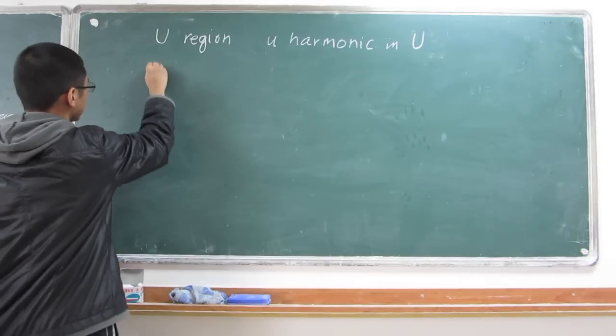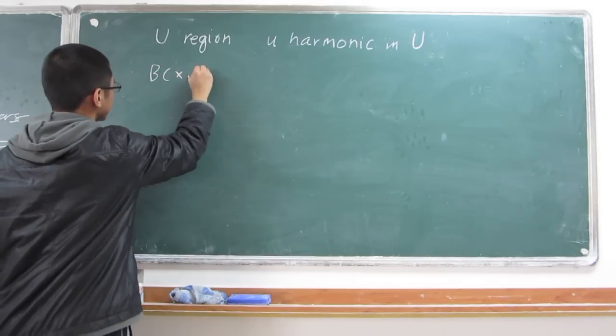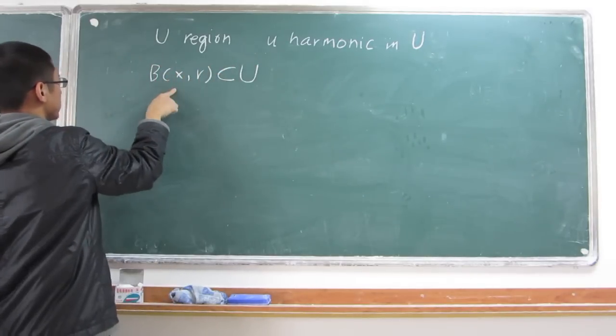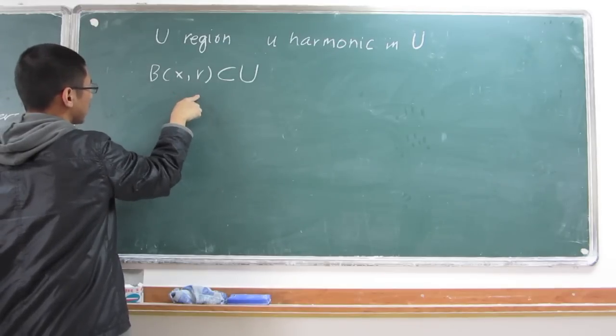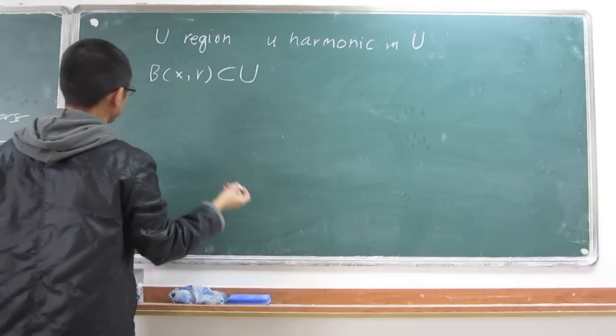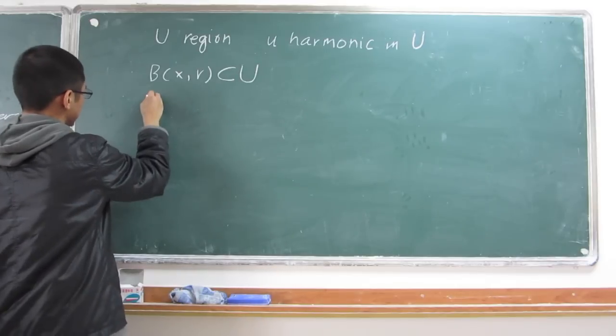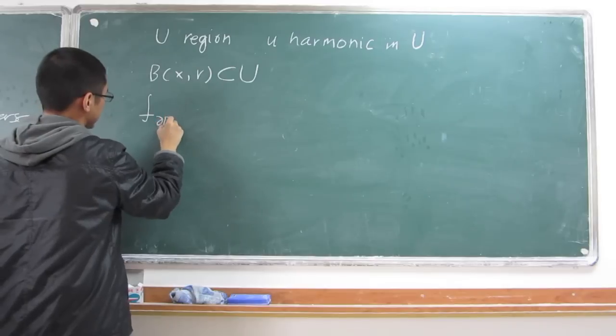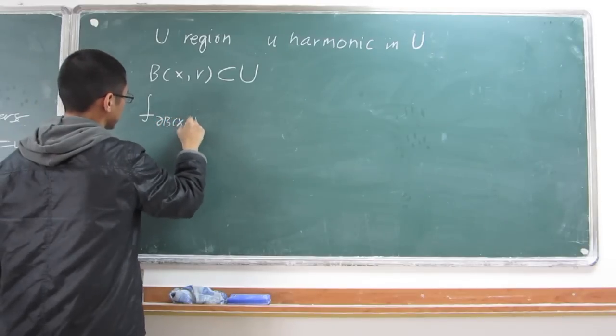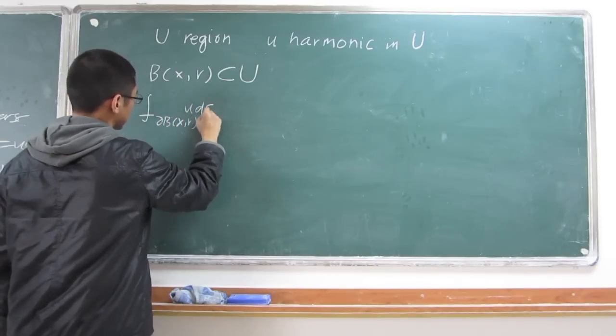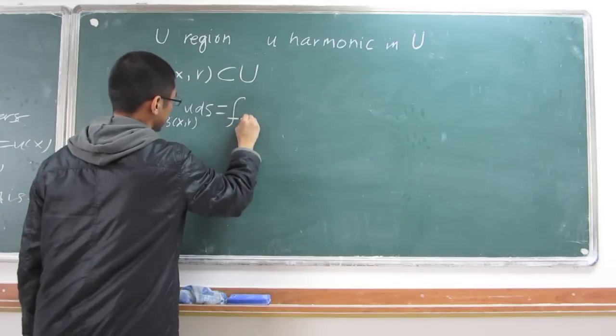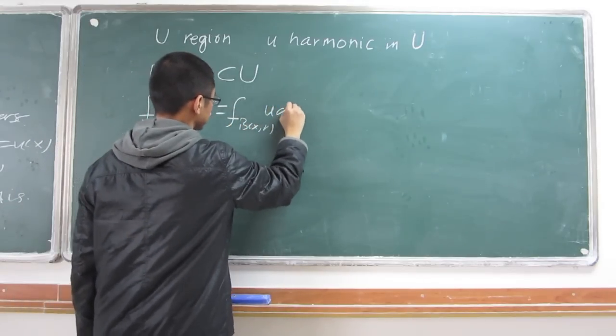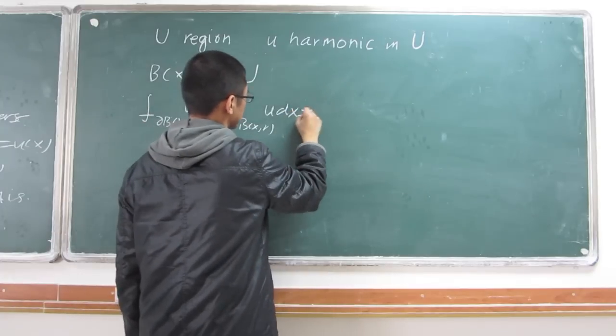For any ball B(x,r) in U, which is centered at x and has a radius r, the mean value formula here tells us that the integral average over the sphere or over the entire ball equals to u(x).